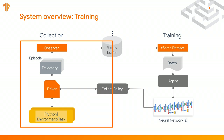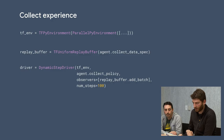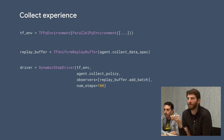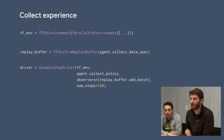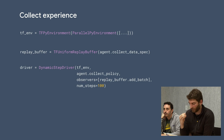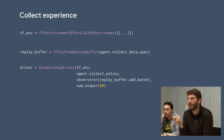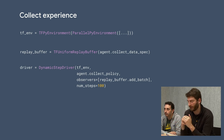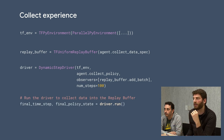Going back to the full picture: all these SavedModels are being used for data collection. We have an environment, a replay buffer, and a driver that utilizes a policy — either directly from the agent or a loaded SavedModel in distributed settings. We define observers that, as the driver evaluates the policy with the environment, can take a look at the trajectory generated at each time step — adding it to the replay buffer, or computing metrics during evaluation. Once you have that set up, you simply run the driver to do data collection.